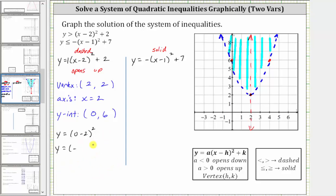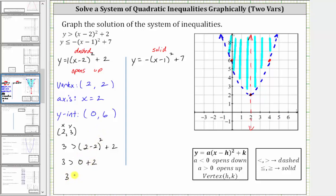So using the point two comma three, we substitute two for x and three for y back into the original inequality, which gives us three is greater than the quantity two minus two squared plus two. We substituted three for y and two for x, and now we need to see if this is true or false. Simplifying on the right: two minus two is zero, the square of zero is zero, and zero plus two is two. Three greater than two is true, which means we do have the solution correct for the first quadratic inequality.